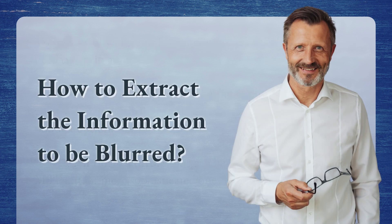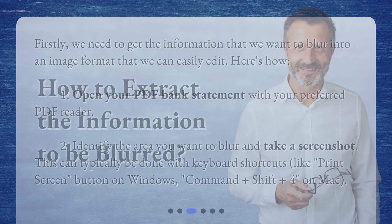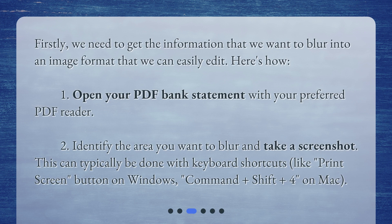How to extract the information to be blurred? Firstly, we need to get the information that we want to blur into an image format that we can easily edit. Here's how: Open your PDF bank statement with your preferred PDF reader. Identify the area you want to blur and take a screenshot. This can typically be done with keyboard shortcuts like Print Screen on Windows, or Command plus Shift plus 4 on Mac.